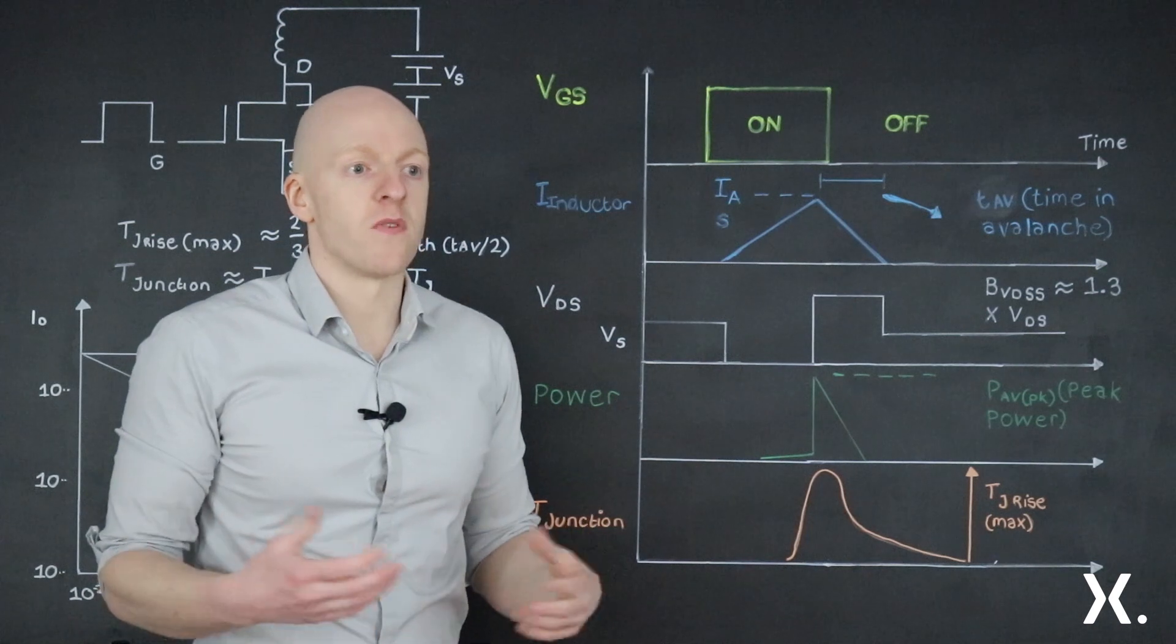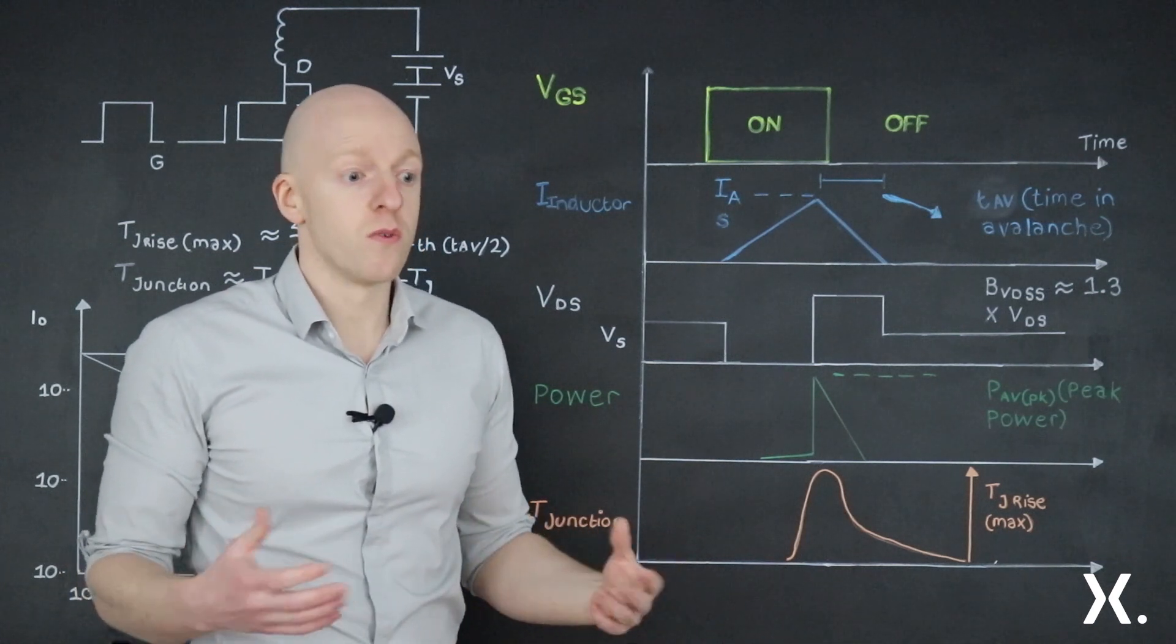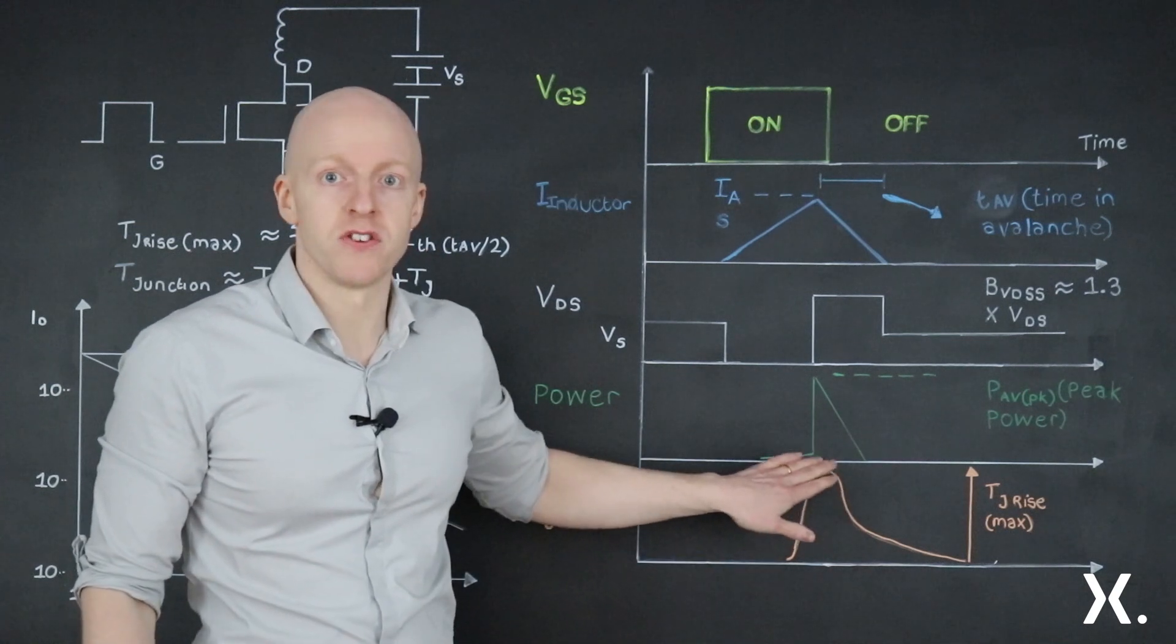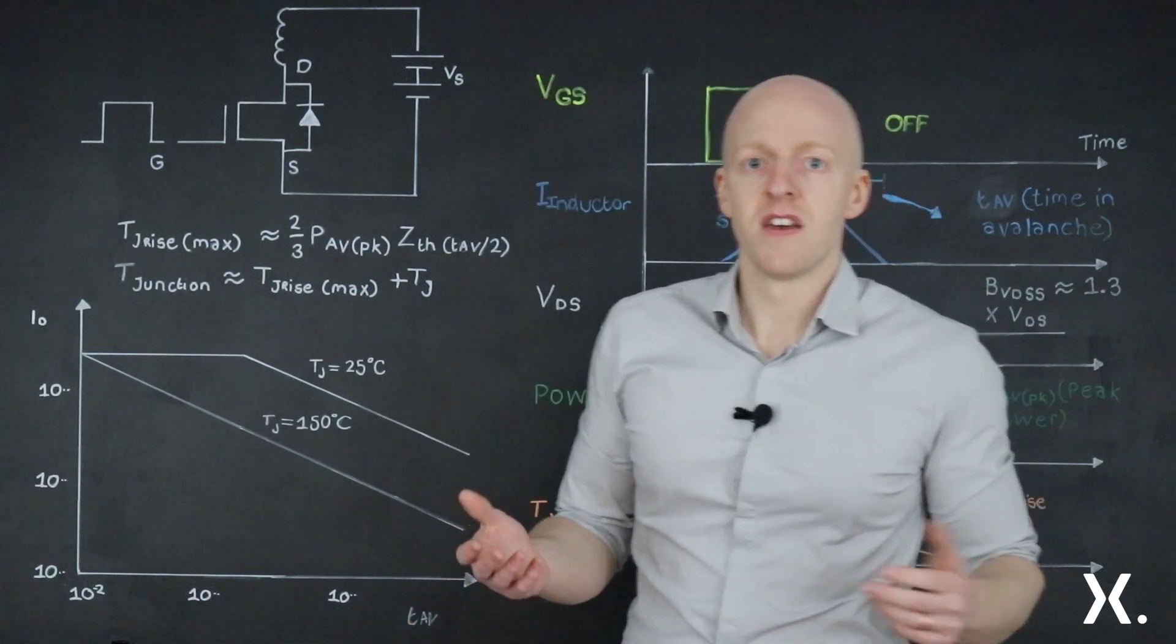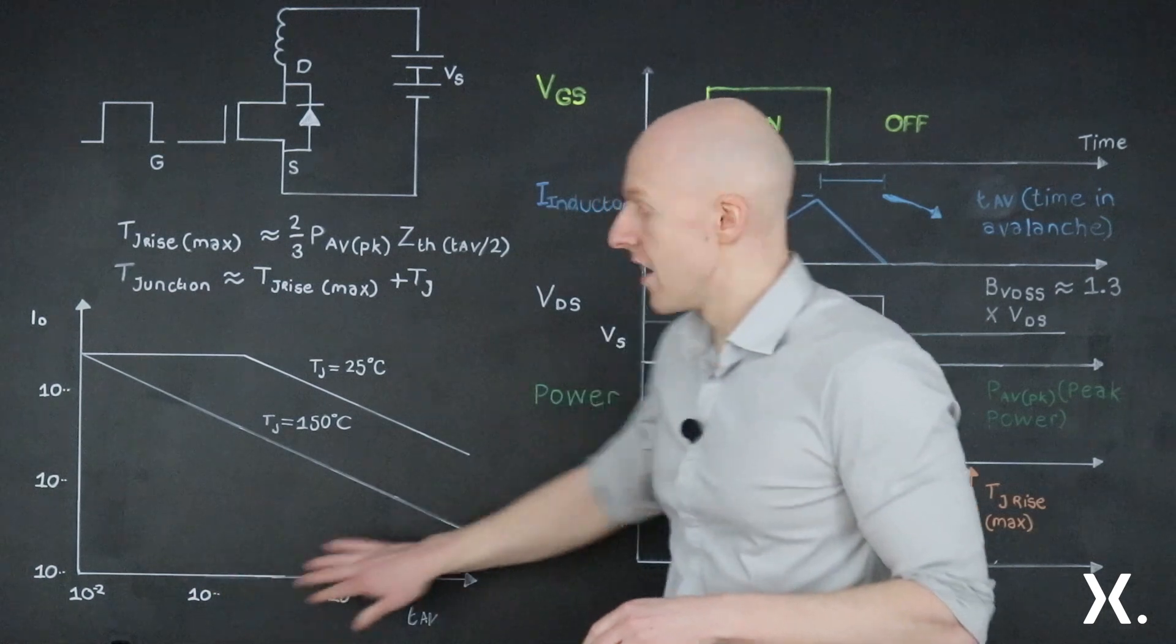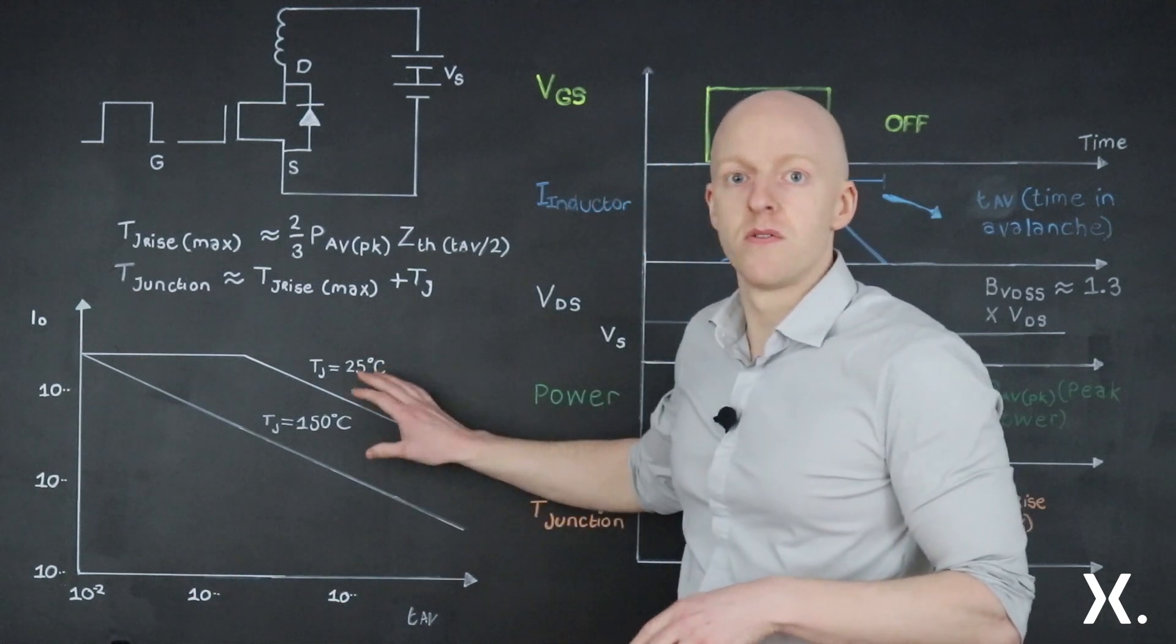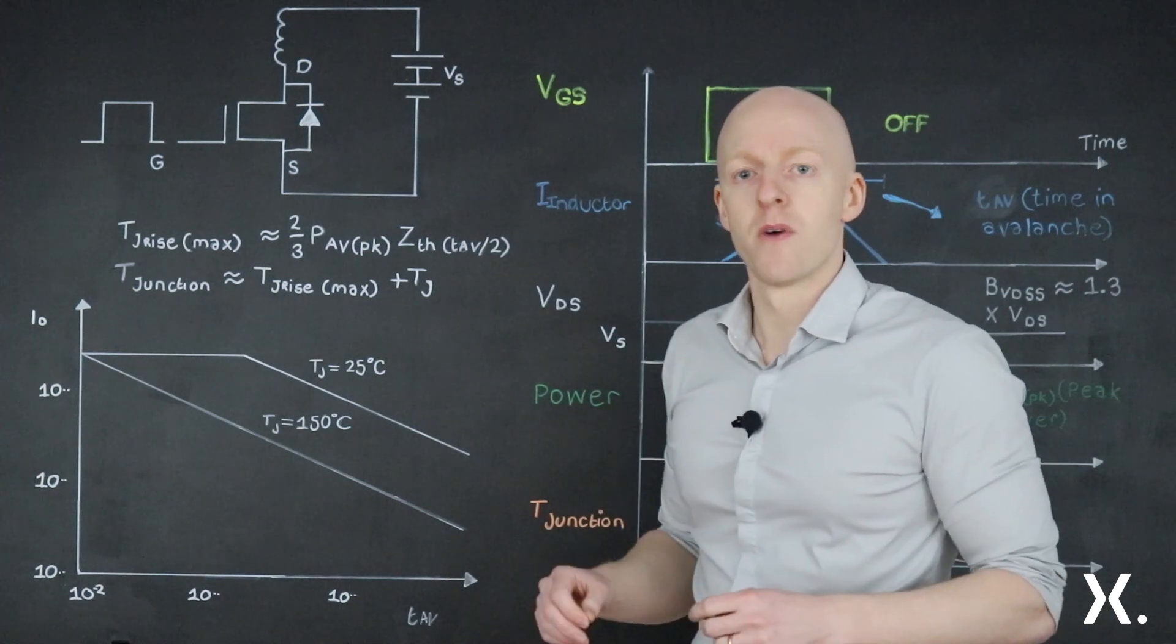Now, if you're using a MOSFET in an application where you know avalanche is going to happen, you want to know that you're not going to reach that over temperature. And to do so, you need to look into a MOSFET's datasheet. And inside there, you'll find a chart like this one, which is giving you the safe operating area for when you're working in avalanche with MOSFETs.